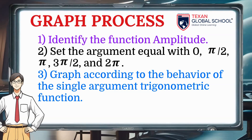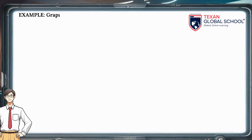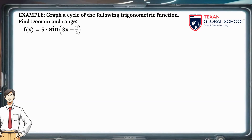For example, we will graph a cycle of the following trigonometric function and obtain its domain and range. We can see that the numerical coefficient is 5, which is the value of the amplitude of the sine function. This means that the sine function with a single argument grew from 1 to 5.